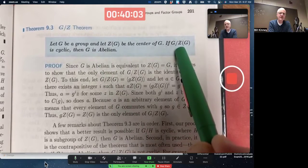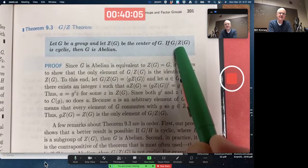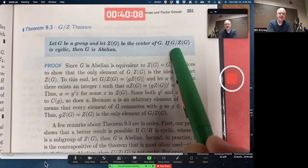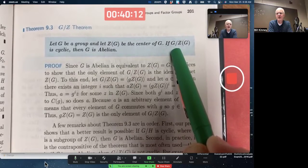Which would mean this factor group is trivial. Z of G would be all of G, so there'd only be one coset. Kind of a strange little fact, but true.